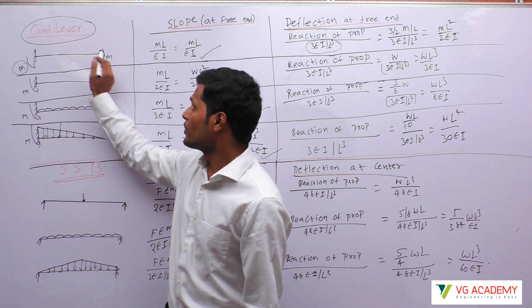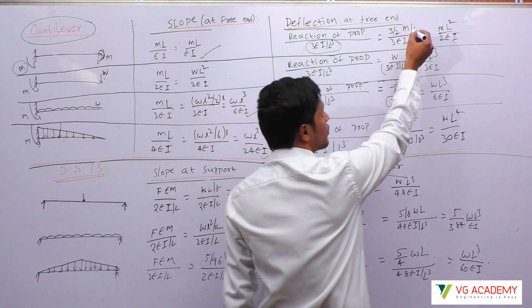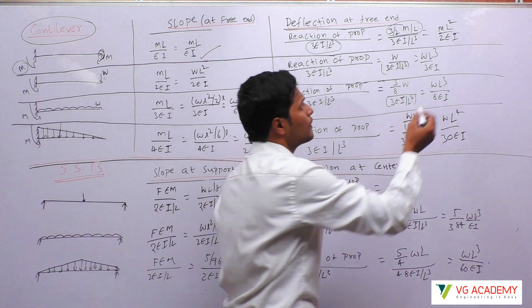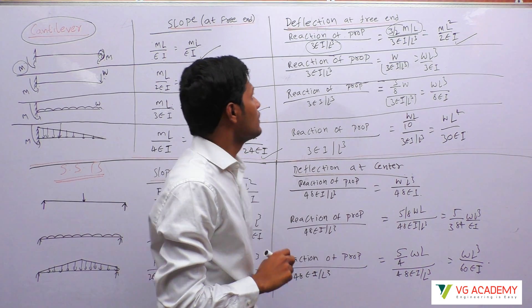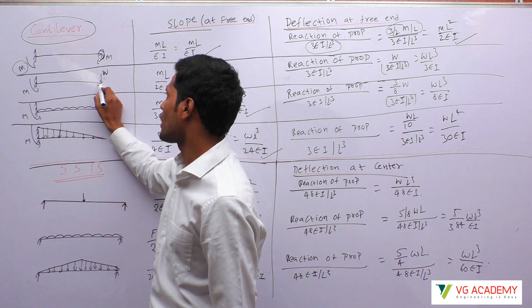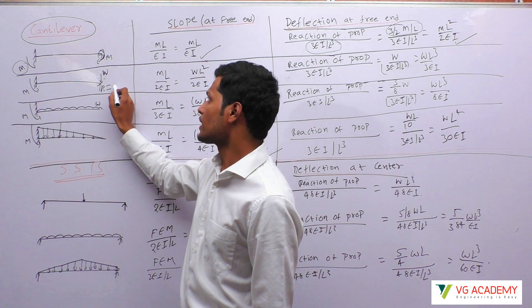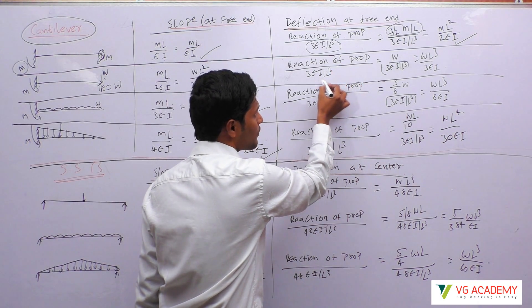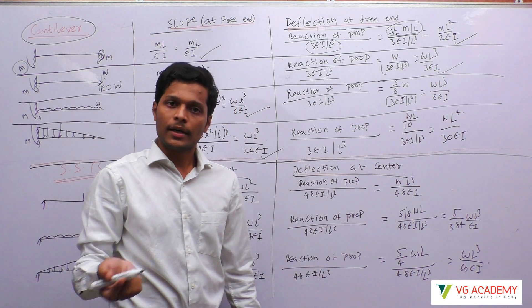For a propped cantilever with moment M at the end, the reaction of the prop is 3M by 2L. Dividing by 3EI by L cubed gives ML squared by 2EI. If you place a point load W, the entire load goes into the prop, so the reaction is W. Therefore, W divided by 3EI by L cubed gives WL cubed by 3EI.